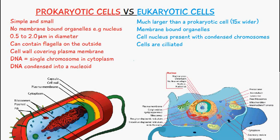So a prokaryotic cell doesn't contain, for example, a nucleus. Prokaryotic cells can also contain a flagella on the outside, though the flagella for prokaryotic cells is more complex in structure compared to eukaryotic cells. A prokaryotic cell can also have a cell wall which covers the membrane, and the DNA in a prokaryotic cell is a single chromosome in the cytoplasm. This chromosome can be condensed into a nucleoid, which is a space in the cytoplasm dedicated to storing genetic information.